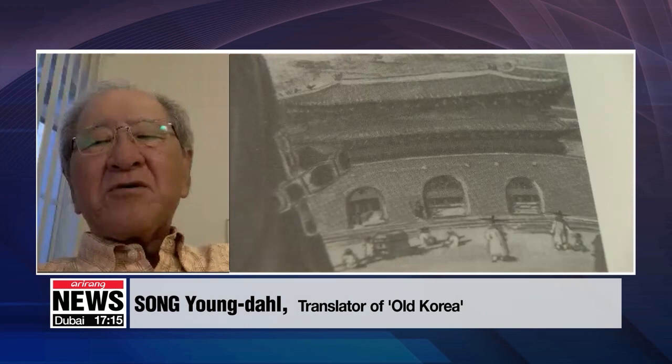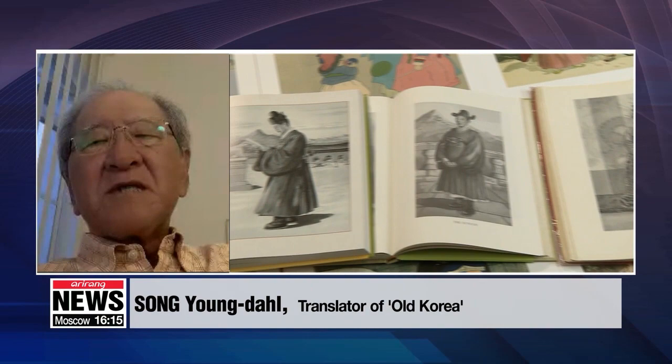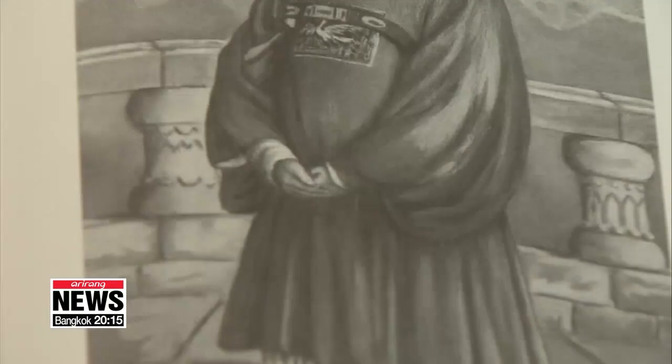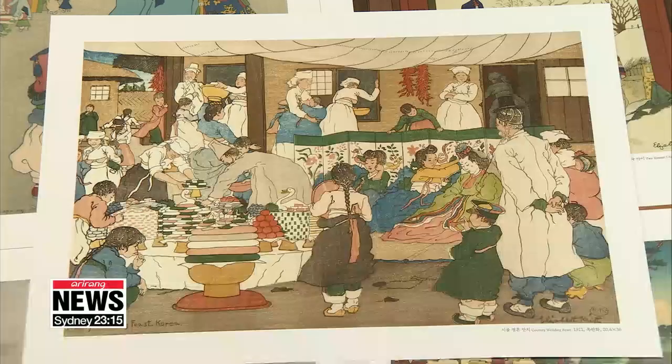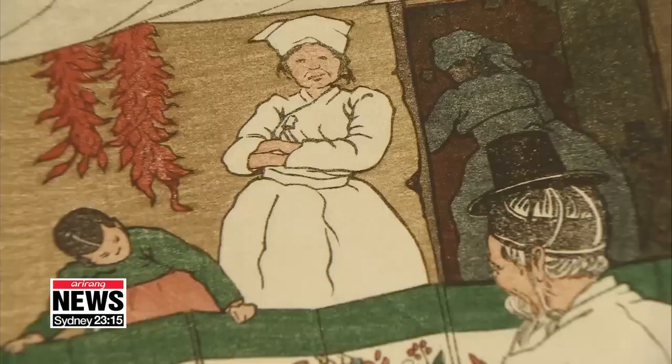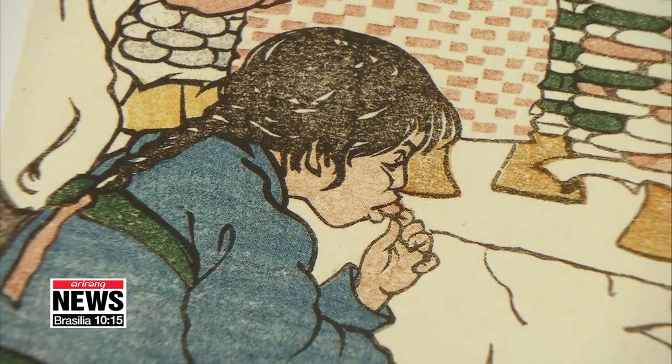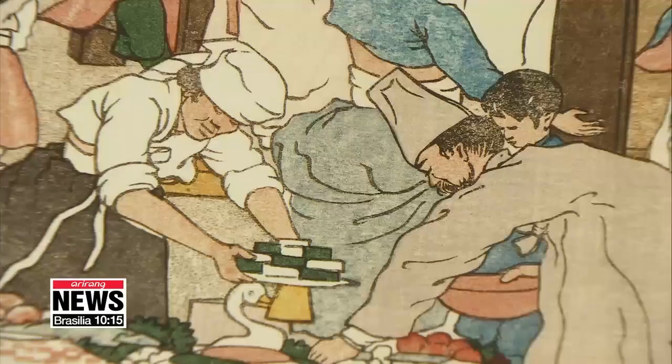When she drew the eunuch, she drew him as if he were in Gyeongbokgung Palace. Most pictures of the time only showed certain parts of society, but Elizabeth Keith's drawings gave readers an insight into all classes of society, especially the lives of women and children in Korea during that time.